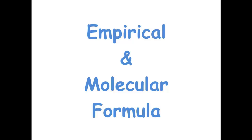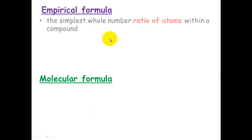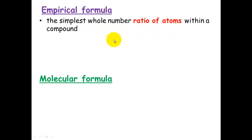Empirical and molecular formula — what they are and how to derive them. The empirical formula is the simplest whole number ratio of atoms within a compound.